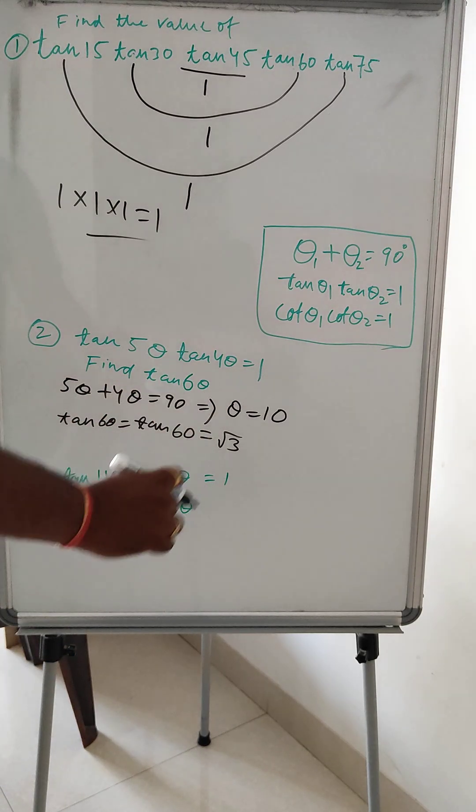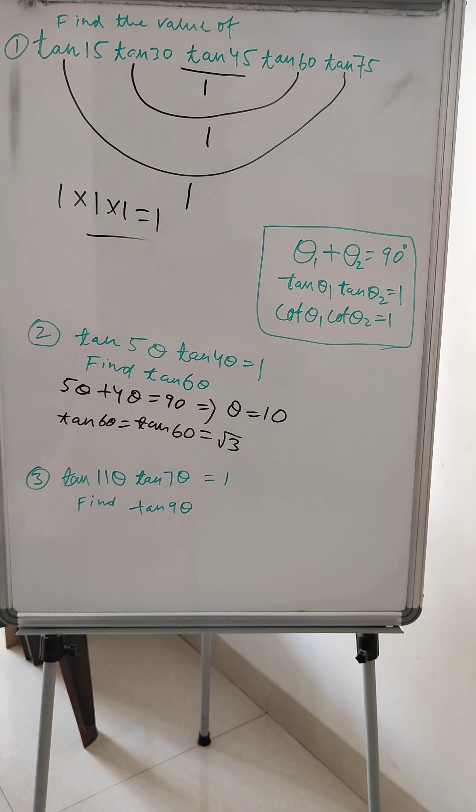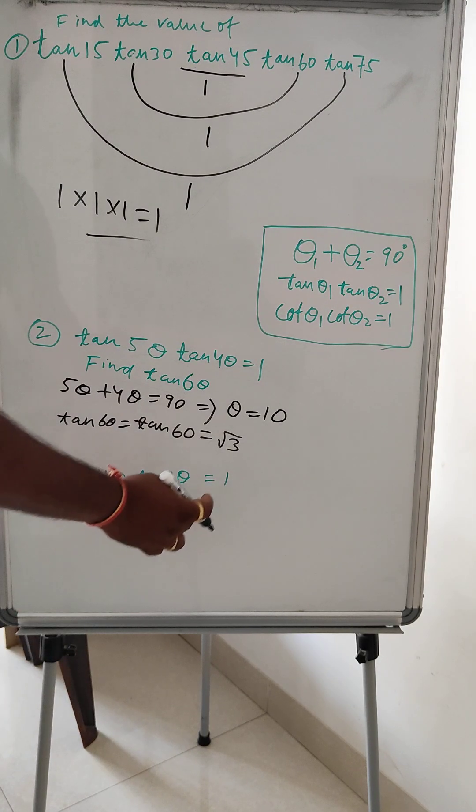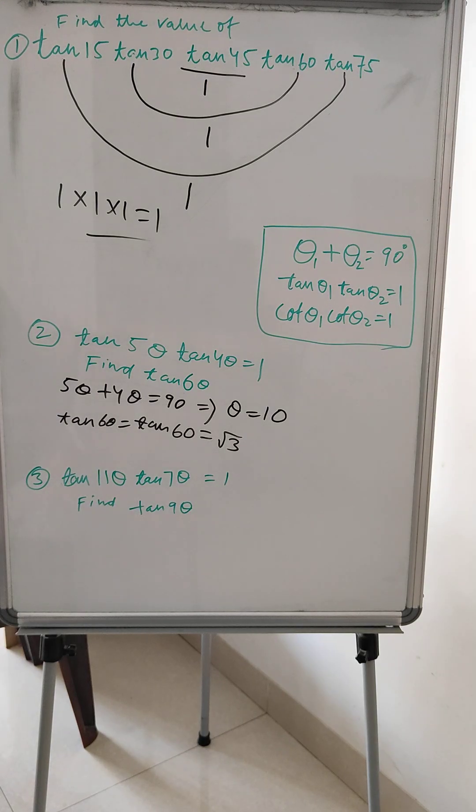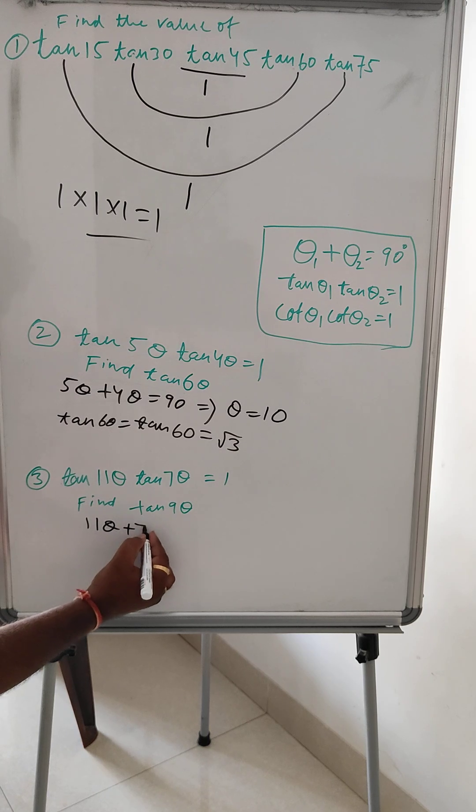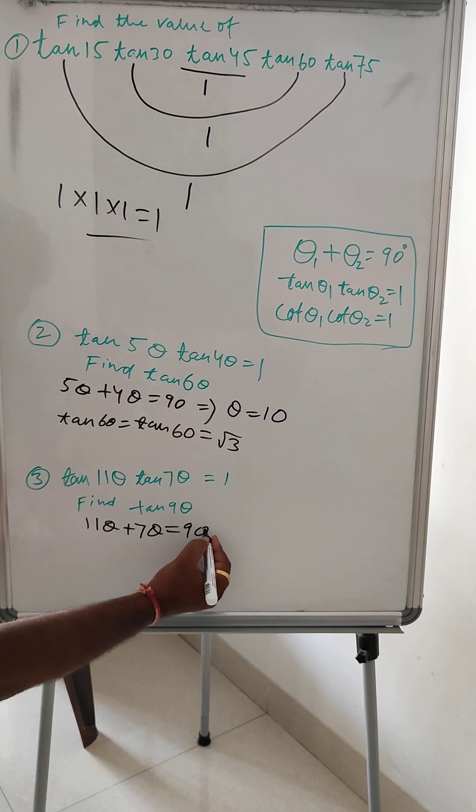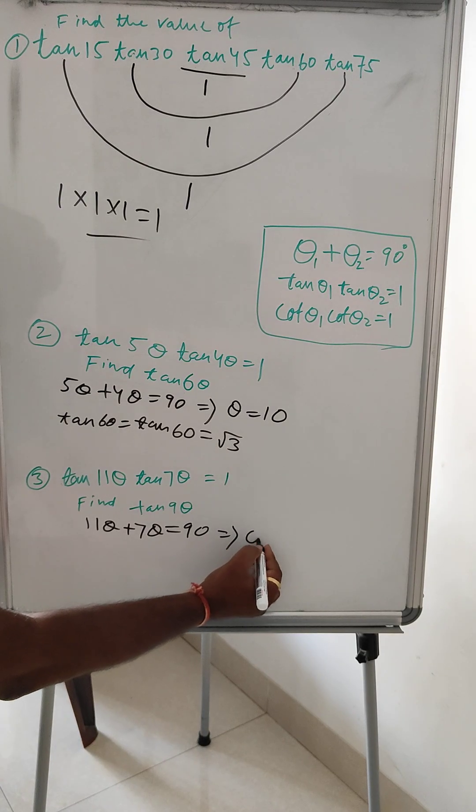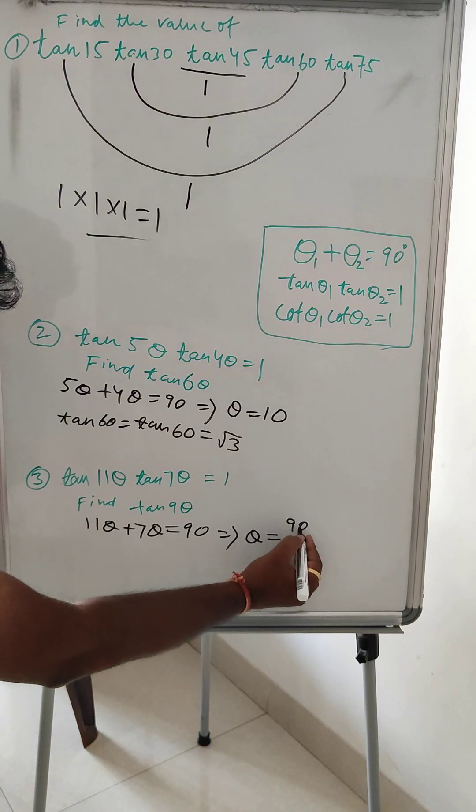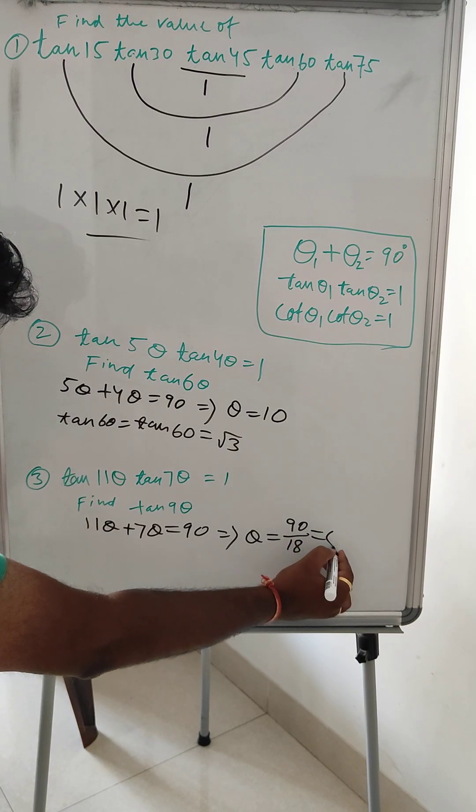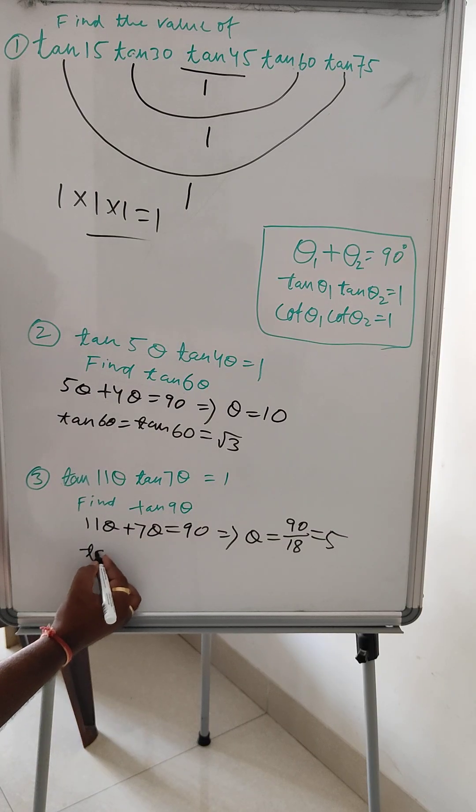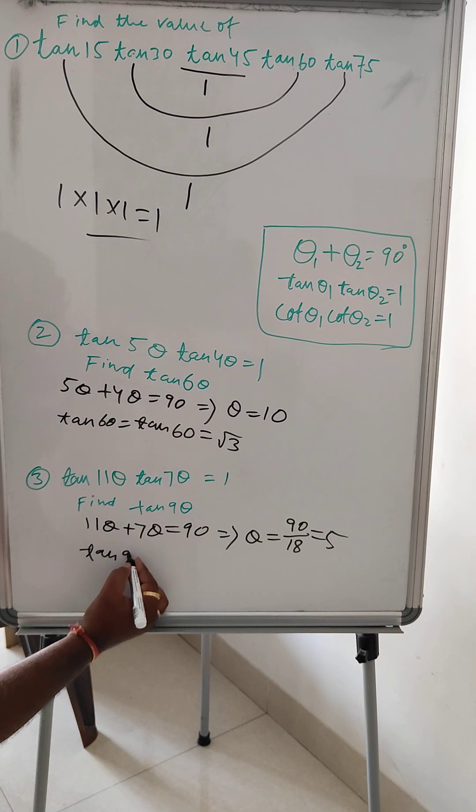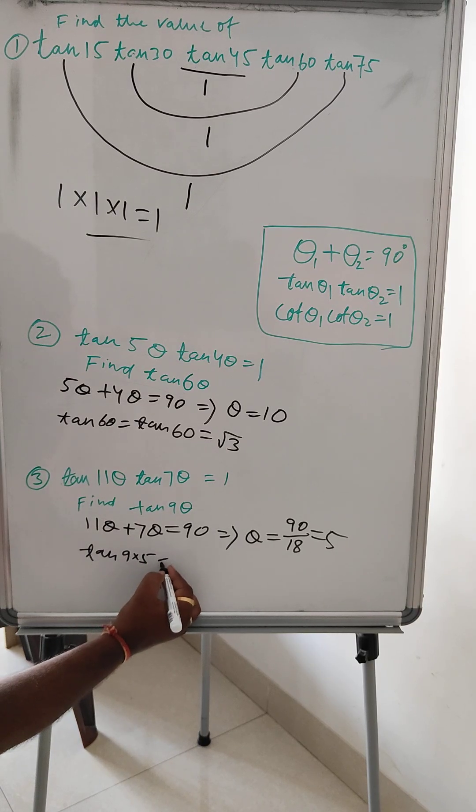So the another problem: tan 11θ × tan 7θ = 1, find the value of tan 9θ. This is very simple. Similarly, 11θ + 7θ = 90°, so 18θ = 90°, then θ = 90 divided by 18, which is equal to 5. Then tan 9θ—9 × 5—tan 45°, and tan 45° is equal to 1.